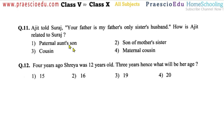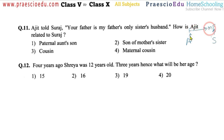Question number eleven: Ajit told Suraj 'your father is my father's only sister's husband.' Ajit (A) and Suraj (S) — Suraj's father (F) is the husband of Ajit's father's only sister. This means Suraj's mother is the sister of Ajit's father — they are sister and brother. So Ajit is related to Suraj as a maternal cousin. Option number four is correct.